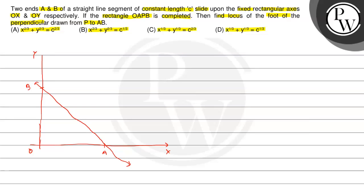Now it is said that rectangle OAPB is completed. For OAPB to be a rectangle, we need perpendicular corners — point P is connected from A and from B to complete the rectangle OAPB. So we need the locus of the foot of the perpendicular drawn from P to AB.